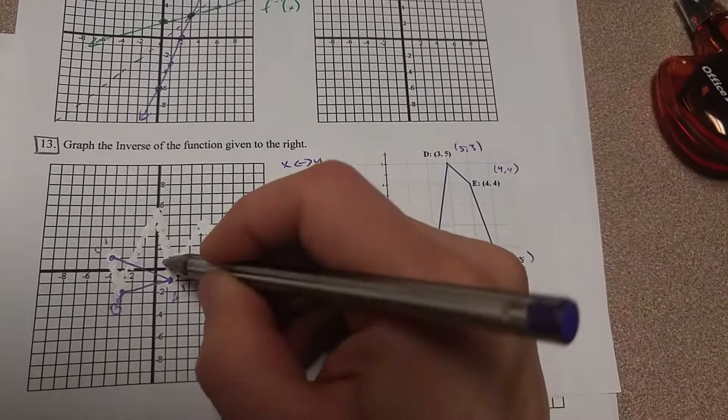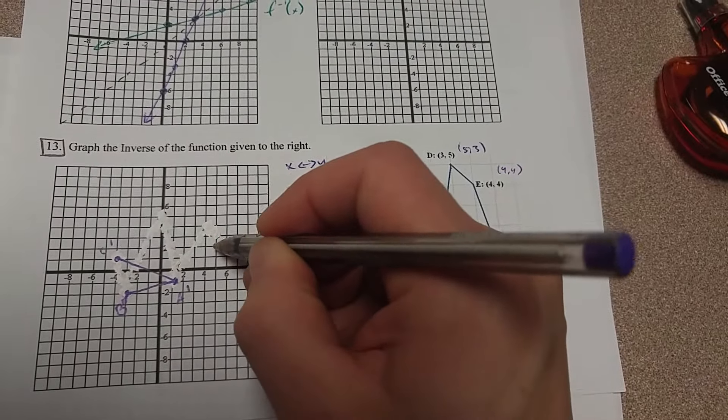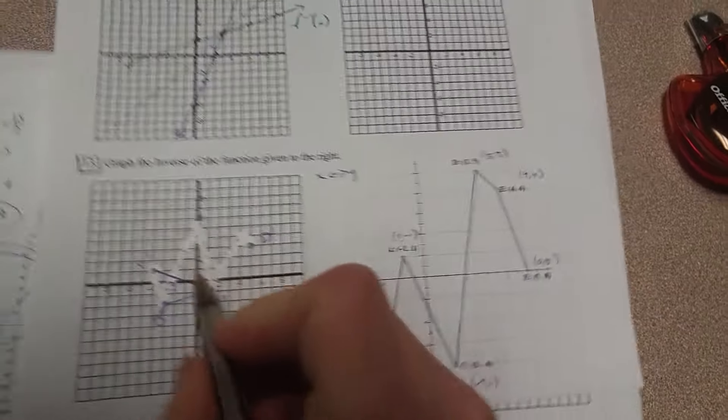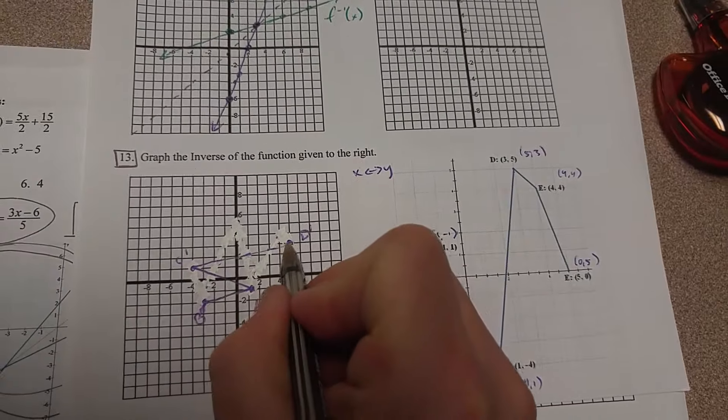And then 5, 3, 1, 2, 3, 4, 5, 1, 2, 3. And that is D prime, and that's going to connect with C prime.